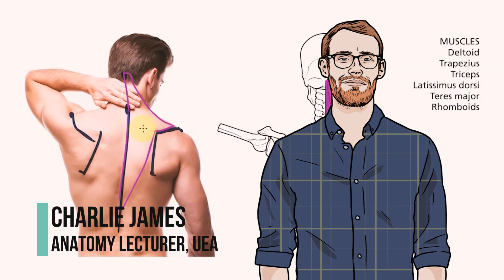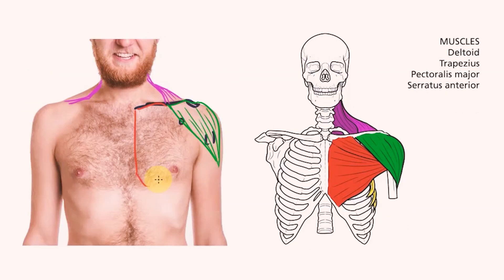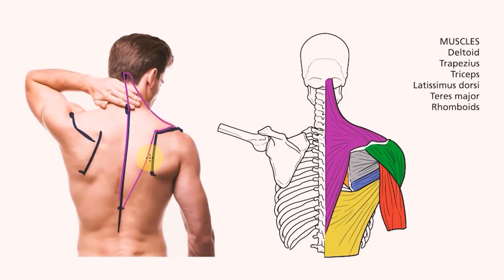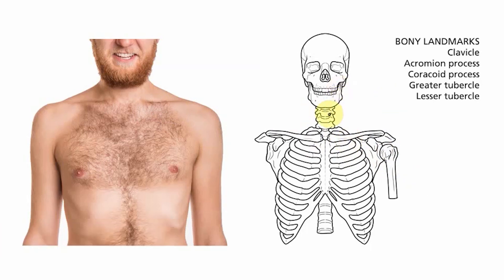Hello, welcome to this video series looking at the surface anatomy of the upper limb. In this first video I'll be looking at the bones and muscles of the chest, shoulder and back. To get the most out of these videos I'd recommend drawing along yourself. If you'd like to have a go you can find a link to the images below. The first thing I want to do is find the bony landmarks on our skeleton and then try to find those same landmarks on our figure.